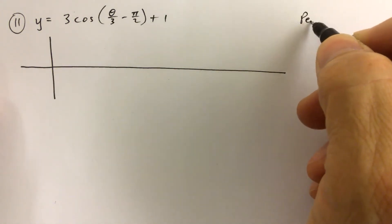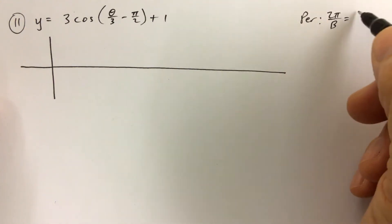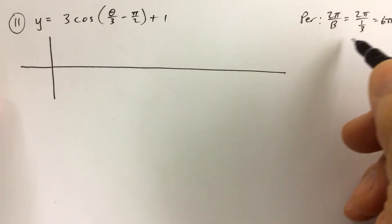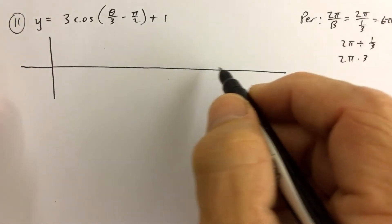For number 11, again, we're going to start off just like we always do. Period is 2π over b. b in this case is 1/3, so the period is 6π. Because 2π divided by 1/3 is the same as 2π times 3, so 6π.